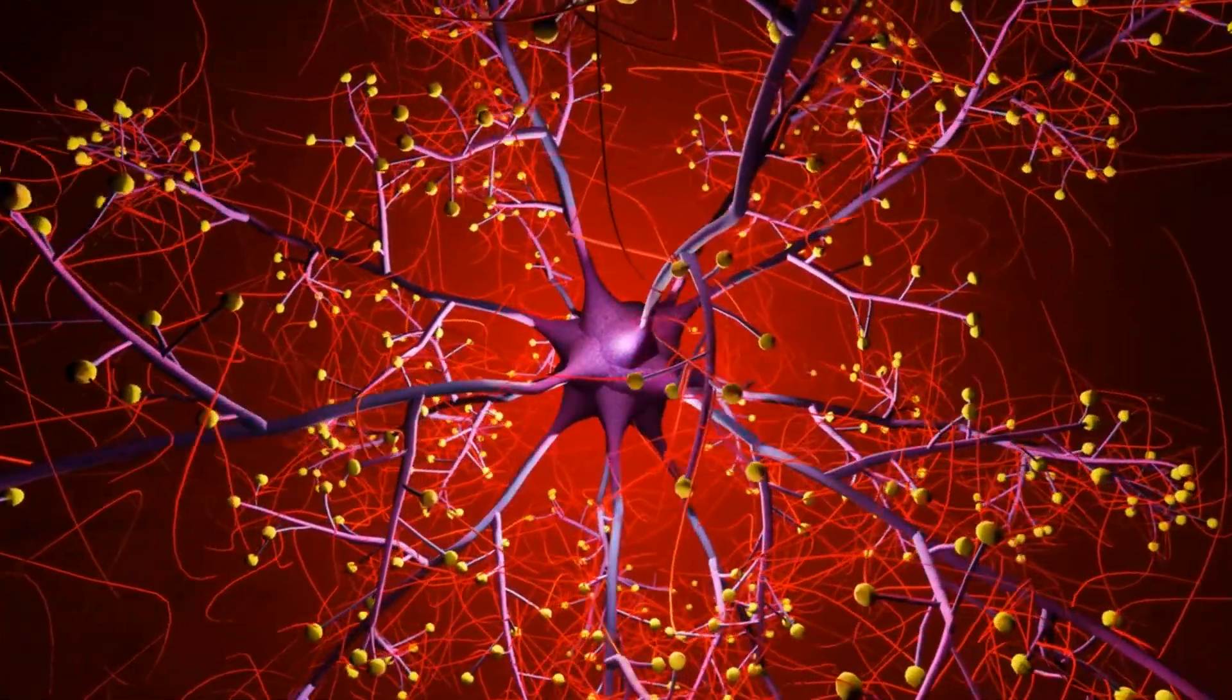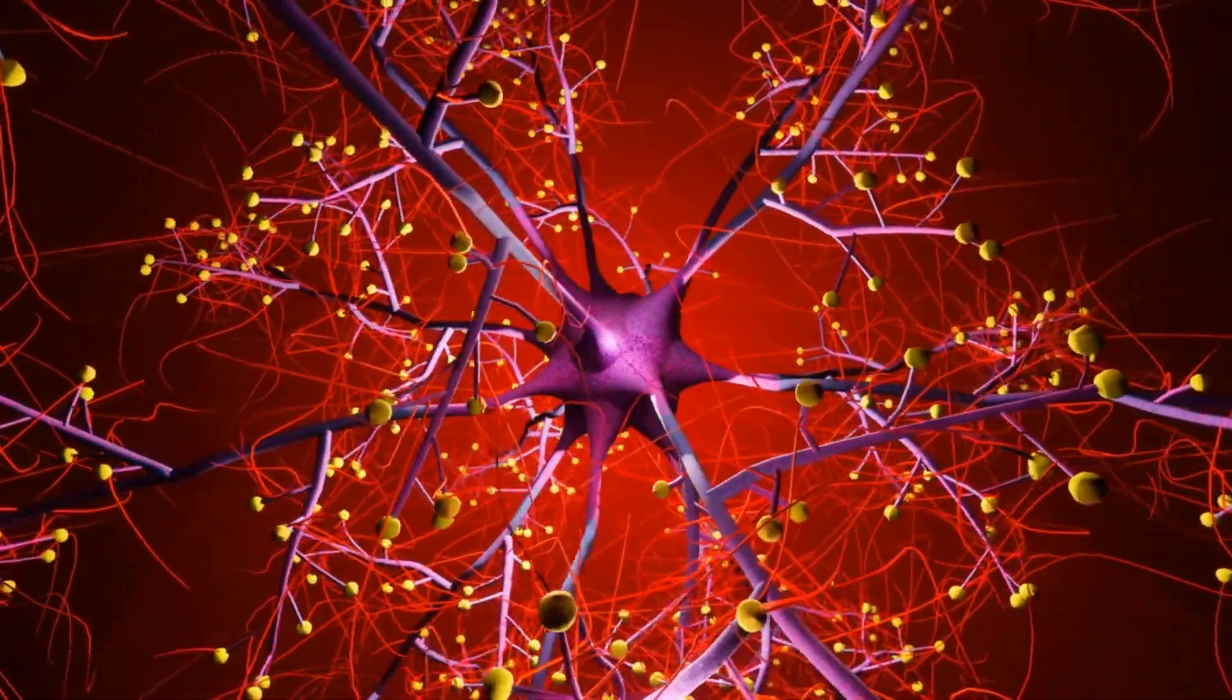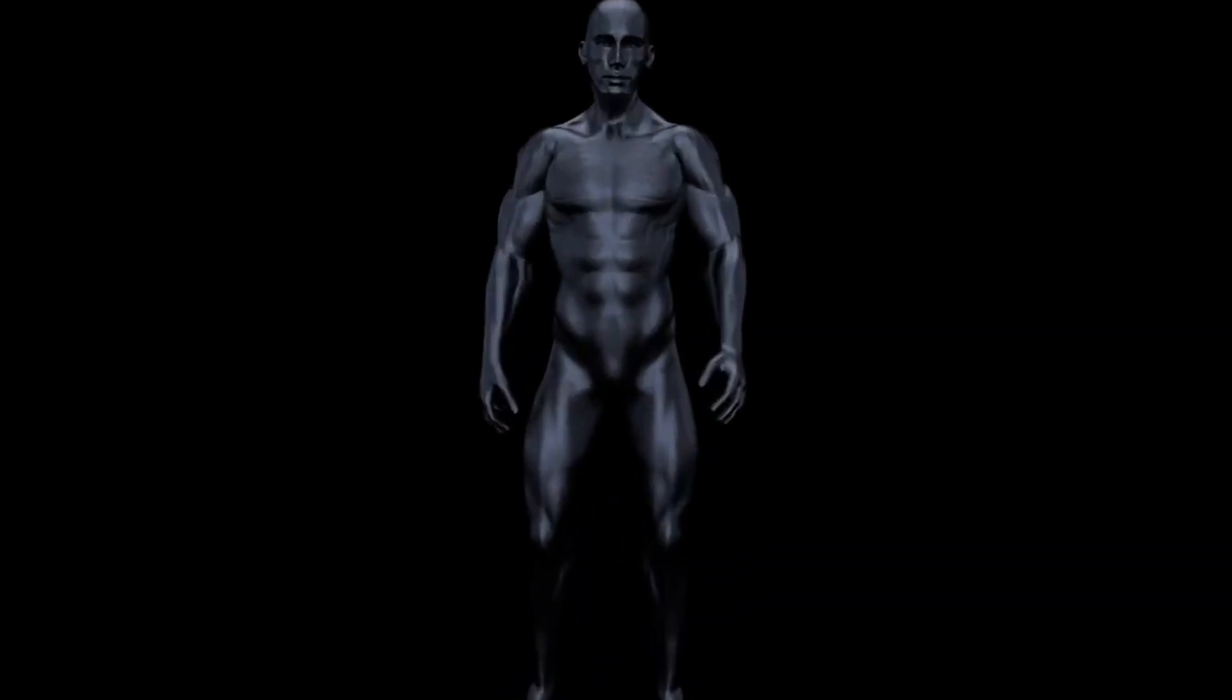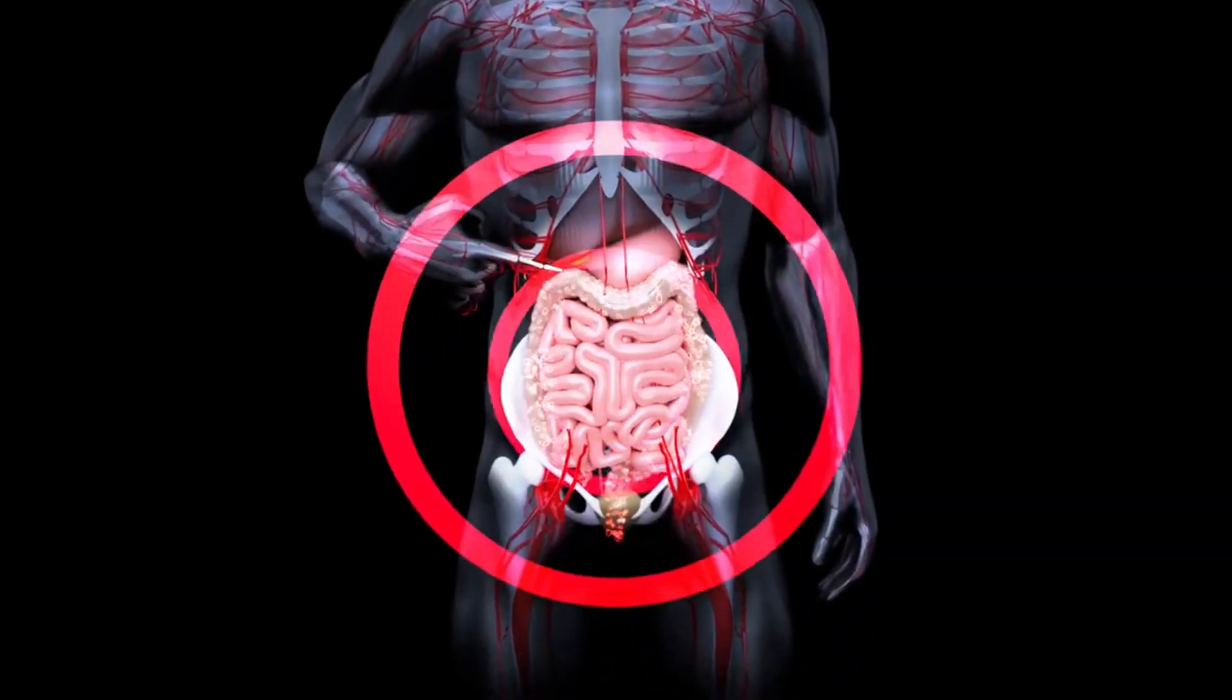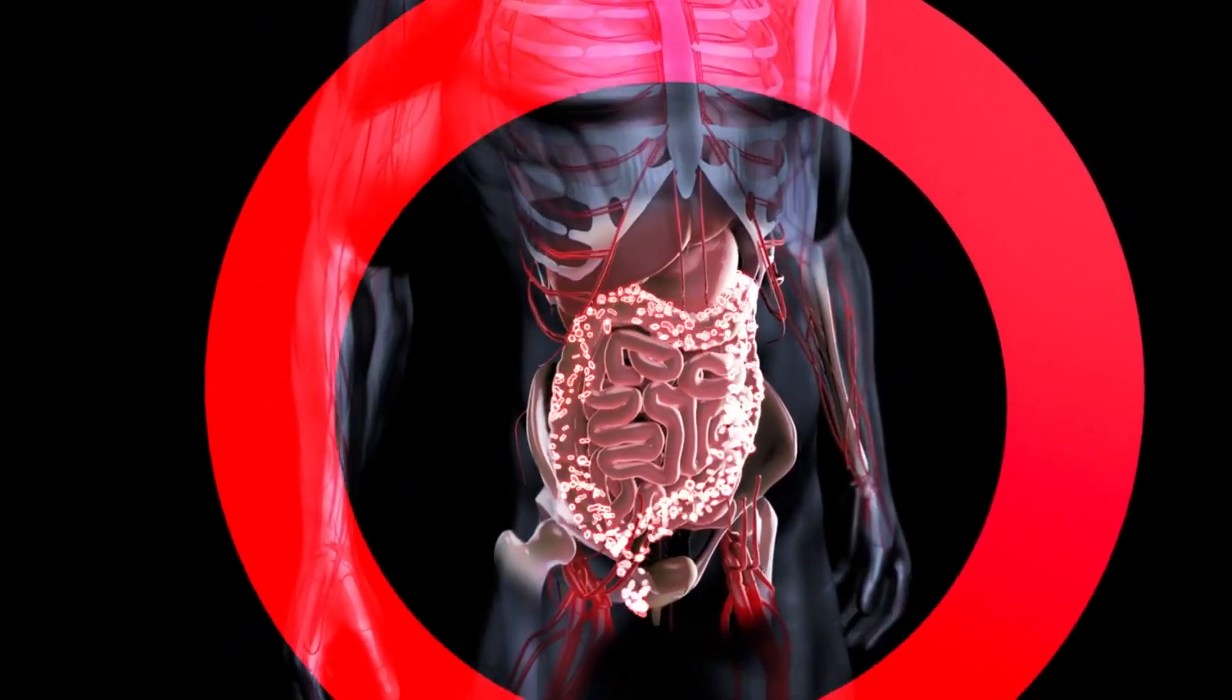But how do these microscopic heroes influence our brain function? It all comes down to the gut-brain axis, a complex communication network that connects your gut and brain. The gut microbiota produces and responds to various chemicals and signaling molecules that travel through this axis, affecting the structure and function of the brain.